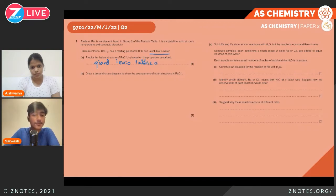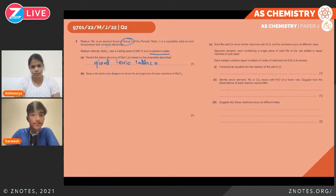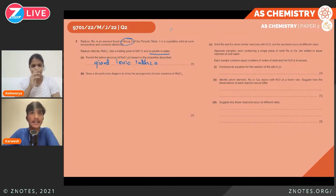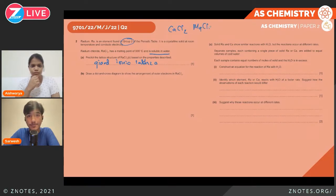Therefore RaCl₂ is a giant ionic lattice. This is also consistent with the fact that Group 2 metals form ionic compounds with halides — for example, CaCl₂ and MgCl₂ all form ionic structures.